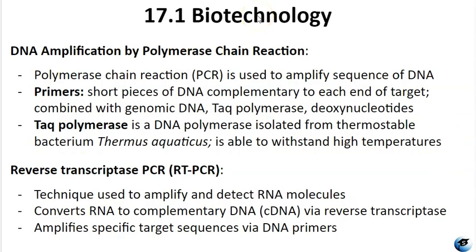DNA amplification is done by PCR — polymerase chain reaction — which is used to replicate a specific target sequence of DNA. It involves using primers, which are short pieces of DNA about 20 nucleotides in length that are complementary to the forward and reverse ends of the target sequence. The primers, along with genomic DNA, Taq polymerase, and deoxynucleotides, are put into a reaction mixture and subjected to alternating hotter and colder temperatures which denatures and anneals the DNA strands.